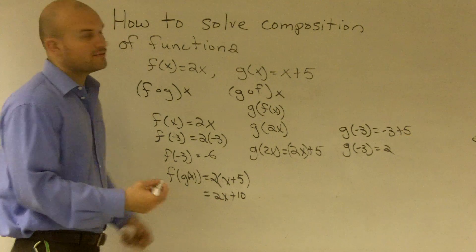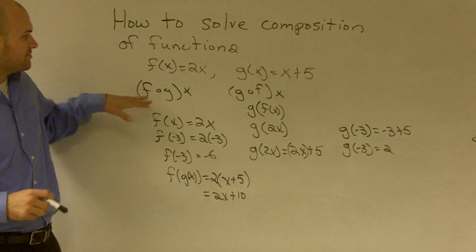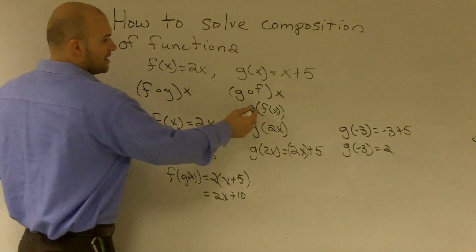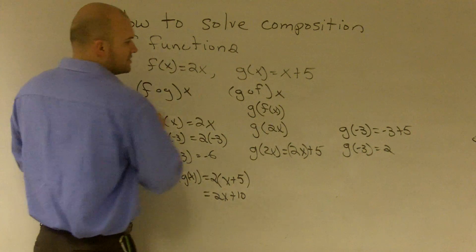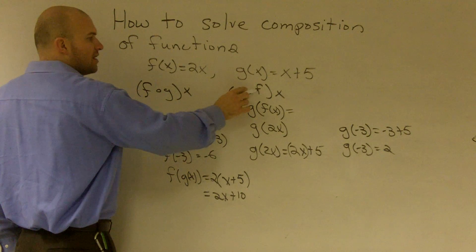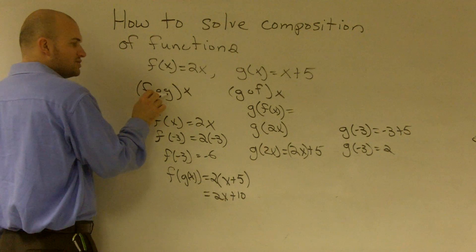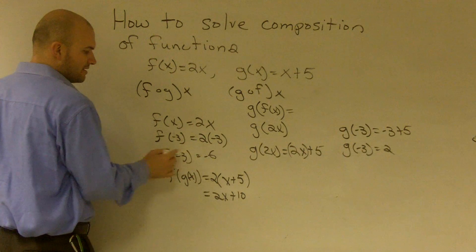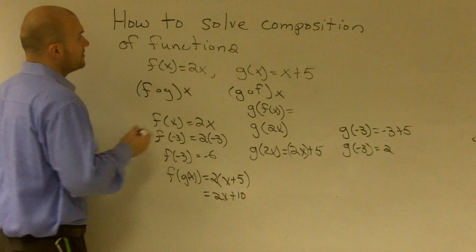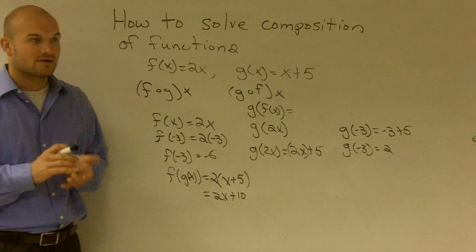The main important thing with composition of functions is to remember what these notations represent. For f of g of x, you're plugging the g function into the f function, and for g of f of x, you're plugging the f function into the g function. Then you just use your input-output values and solve. That's how you solve a composition of functions.